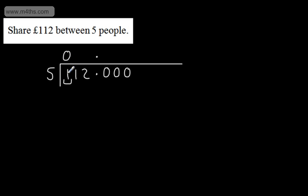My first question is: does 5 go into 1? No. Next question: does it go into 11? Yes — 5 goes into 11 twice, as 5×2=10, so I put in 2, and that leaves me with a remainder of 1, which I put just here.